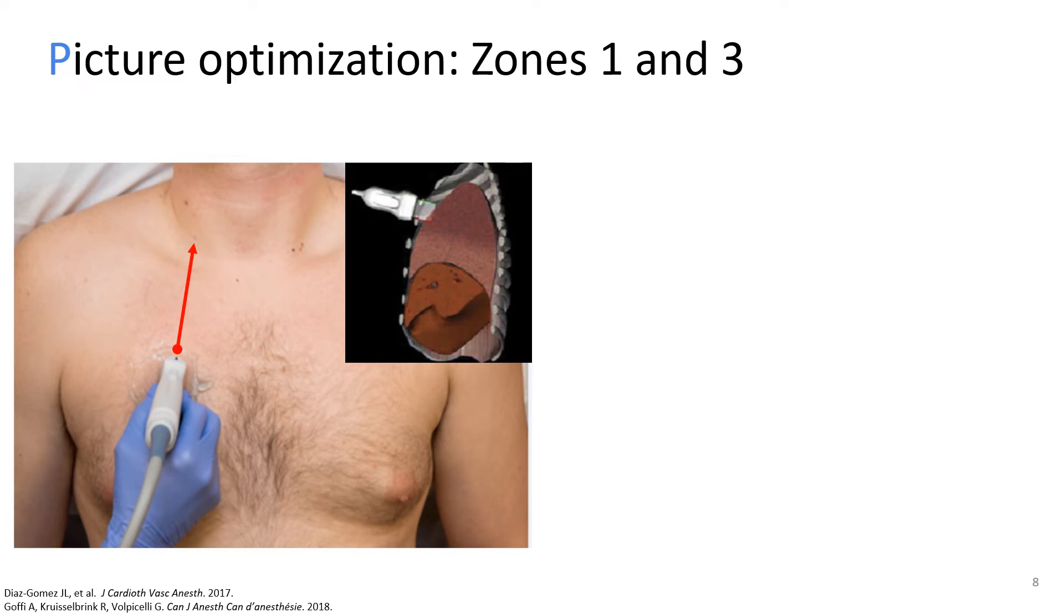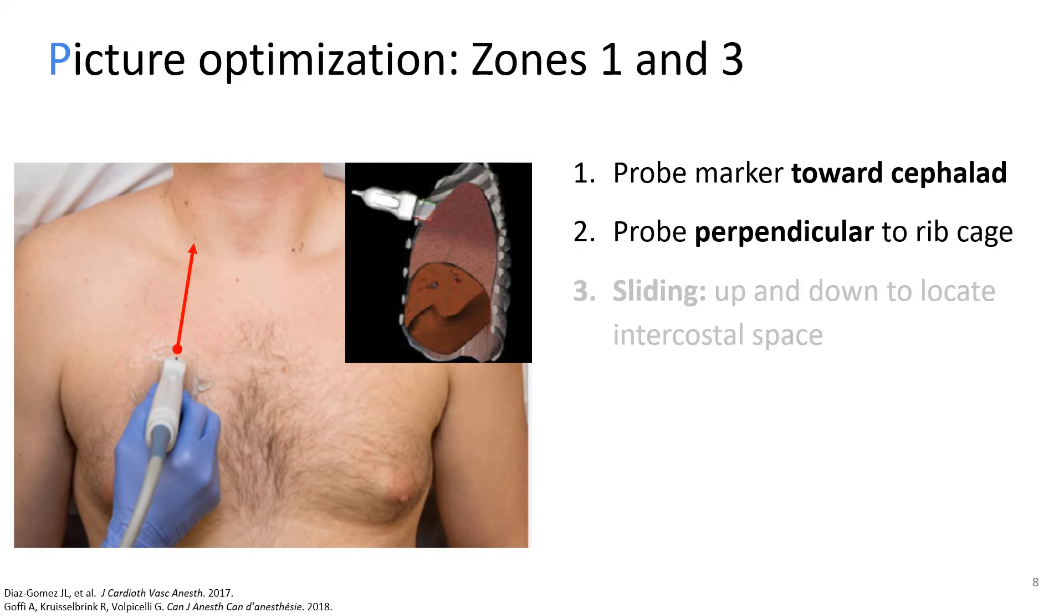Let's start with tips for scanning over zone one and three. First, make sure the probe marker is pointing towards cephalad or 12 o'clock. As you can see here, the red arrow represents the orientation of the probe marker. Generally speaking, for lung ultrasound, the probe indicator should always point towards 12 o'clock. Second, the probe must be perpendicular to the chest wall or rib cage. And third, you can slide the probe up and down until you are located over an intercostal space.